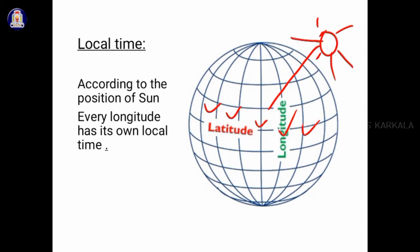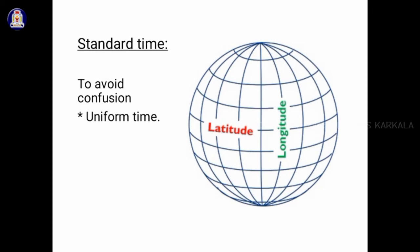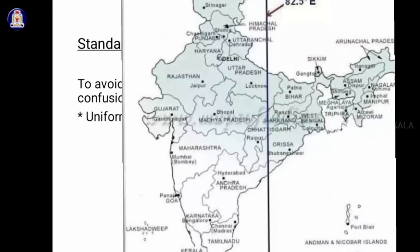Now let's discuss what standard time is. Since local time differs from place to place, it would lead to confusion. To avoid this confusion, many countries follow a uniform time throughout the country. This uniform time is called the standard time of that country. In India, the longitude passing through Allahabad in Uttar Pradesh — 82 and a half degrees east longitude — is considered the standard meridian of the country.